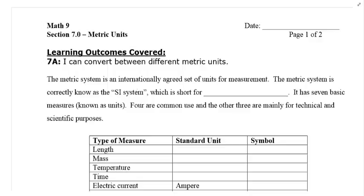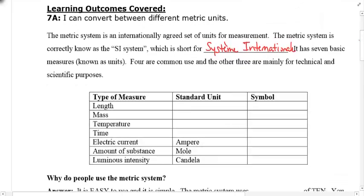Looking at our notes, it says the metric system is an internationally agreed upon set of units for measurement. You should be able to see this all around our world because the metric system is definitely used in Canada, but it's actually known as the SI system, and SI stands for Systeme International, so it's French, or the international system of units. It has several what we call known basic units, and four are commonly used, which I think we all know, but there are three that are not that you might use later on in your life.